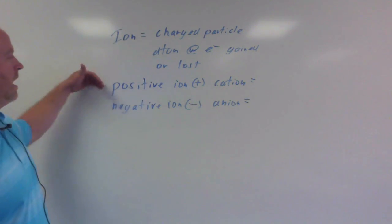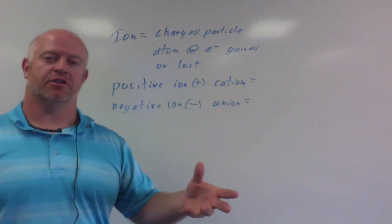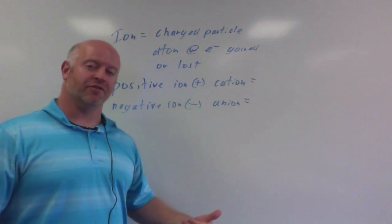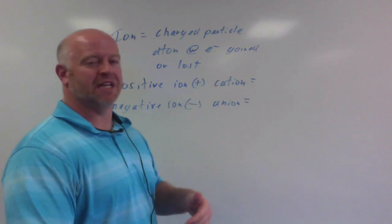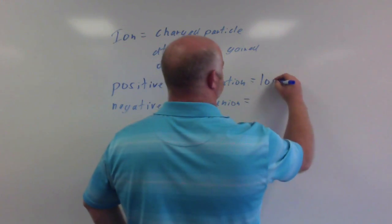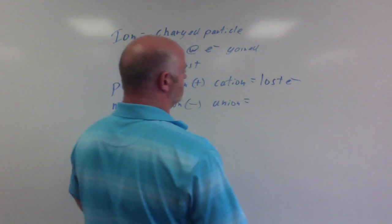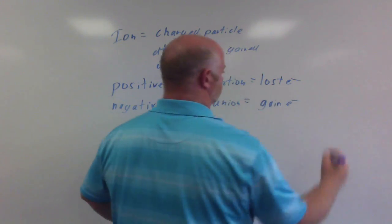So if we're a positive ion, that means we have changed electrons to make it more positive. Remember, electrons are negatively charged. So if we're going to become positive, we must have lost negative charge. So in this case we lost electrons, which means an anion, we gain electrons.